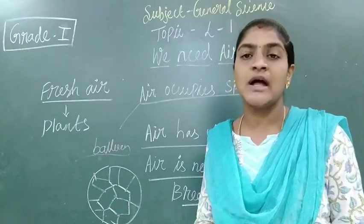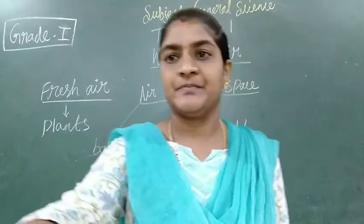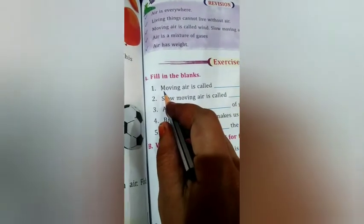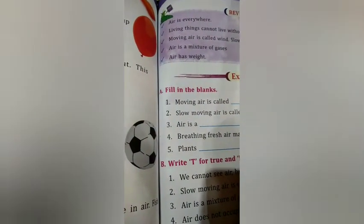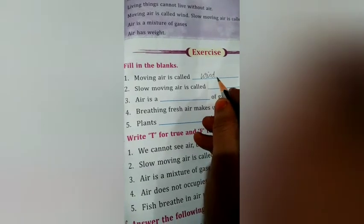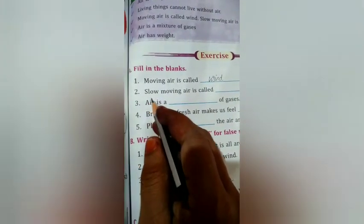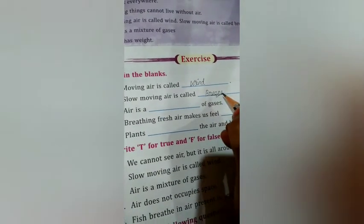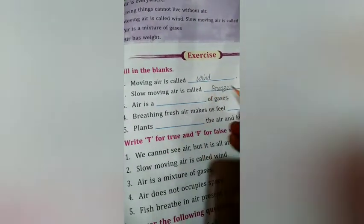Now we will move on to the textbook exercise. Everyone take out your textbook page number 115. We are going to do the textbook exercise. Section A: fill in the blanks. First one: moving air is called wind — W-I-N-D, wind. Second one: slow moving air is called breeze — B-R-E-E-Z-E, breeze.